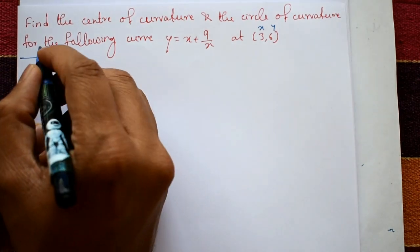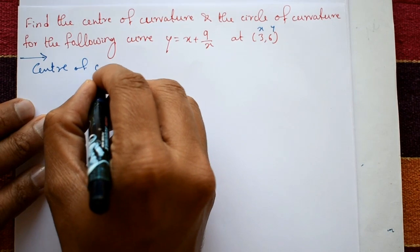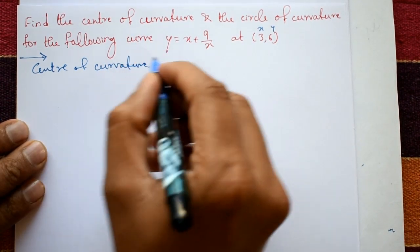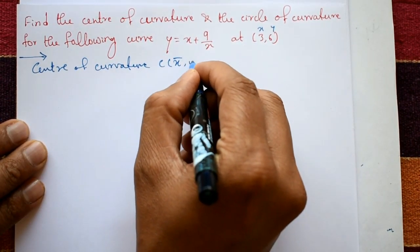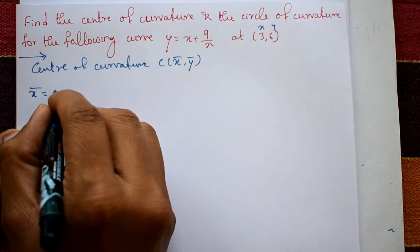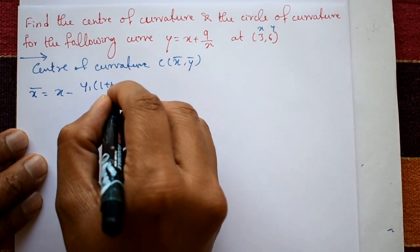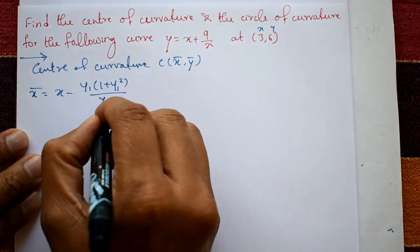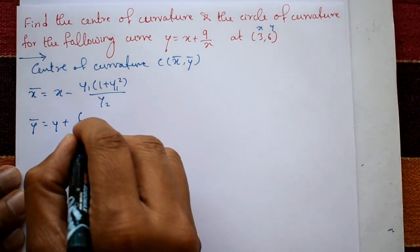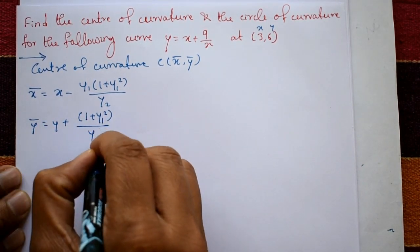Solution: First we write the center of curvature. The center of curvature is C(x̄, ȳ). To find x̄ and ȳ: x̄ = x − y1·(1 + y1²) / y2, and ȳ = y + (1 + y1²) / y2.